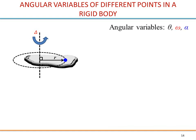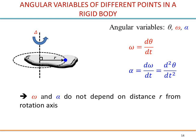Let's summarize: we have these three angular variables. You will notice that omega does not depend on the distance of the point from the axis — it does not depend on R. And alpha is the same — it only depends on the angle, not on the distance. Therefore whatever point you select, you will have the same omega and alpha. This is very convenient because these two angular variables do not depend on the point you select in the body.